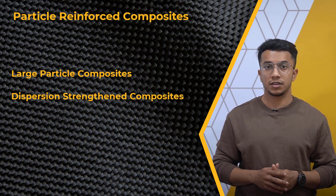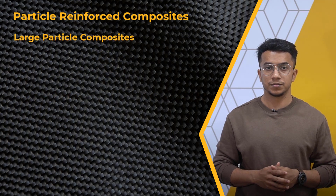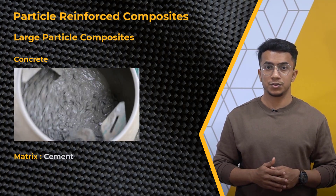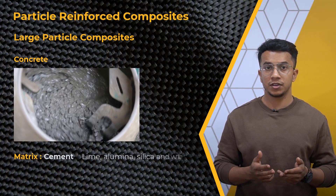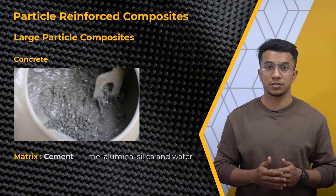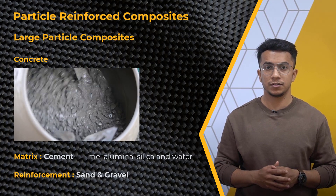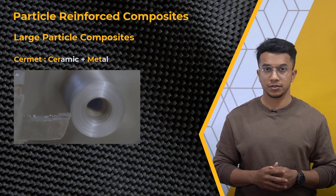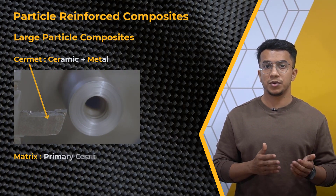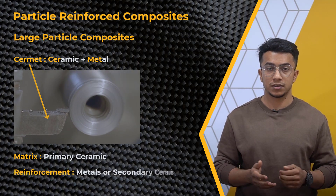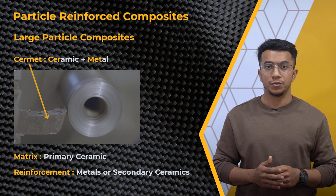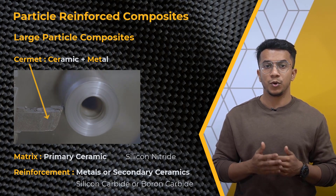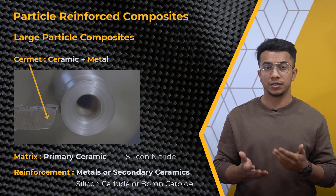Concrete is the most common large particle composite. It is composed of a cement matrix — a fine mixture of lime, alumina, silica, and water — that bonds with particles of varying sizes like sands and gravel. Cermet is another prominent example of a large particle composite. The matrix is a primary ceramic substance into which metals or secondary ceramic particles are incorporated. For example, when silicon carbide or boron carbide is dispersed in a silicon nitride matrix, both materials work together to improve thermal resistance and strength.